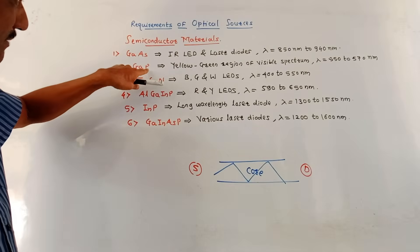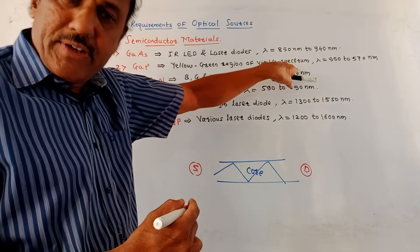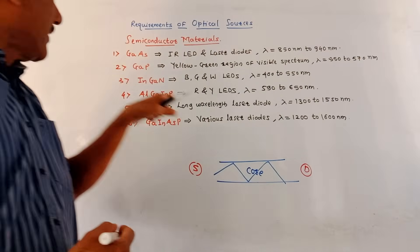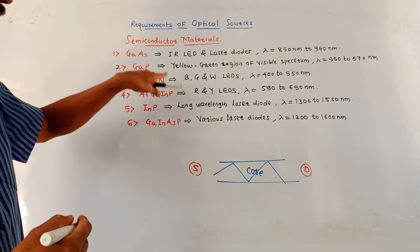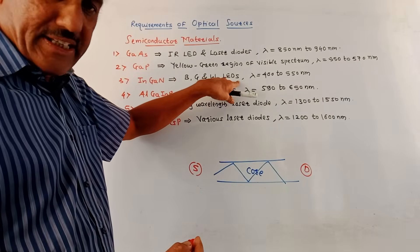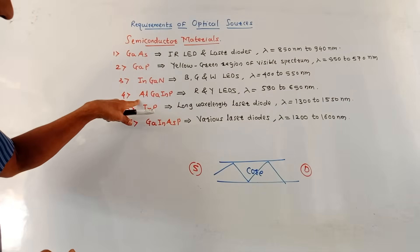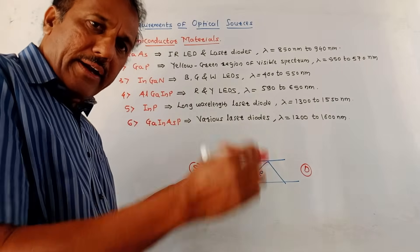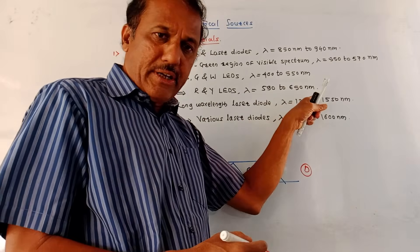The next material is gallium phosphide, which is used in the yellow and green region of the visible spectrum, with a corresponding wavelength range of 550 to 570 nanometers. Next is InGaN — indium gallium nitride — used for blue, green, and white LEDs, with a wavelength range of 400 to 550 nanometers. Next is aluminum gallium indium arsenide phosphide, used for red and yellow LEDs in the visible spectrum, with a wavelength range of 590 to 650 nanometers.